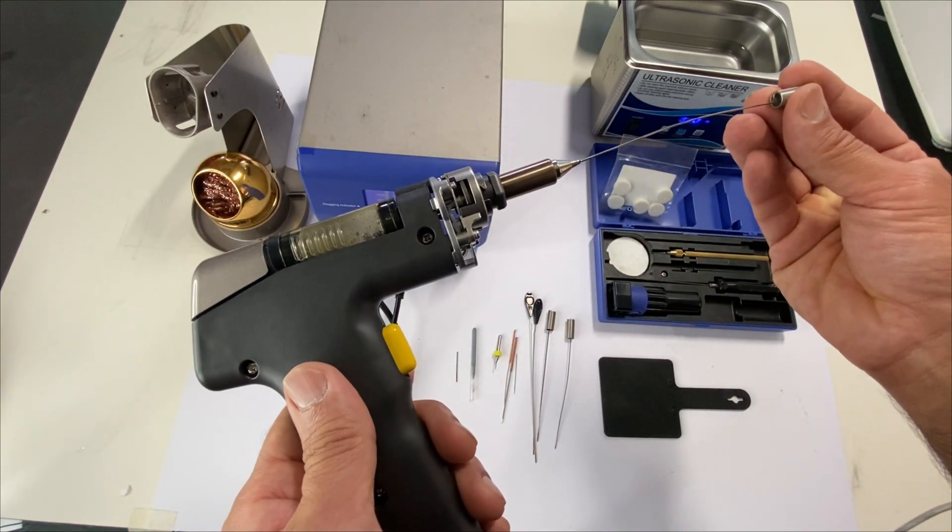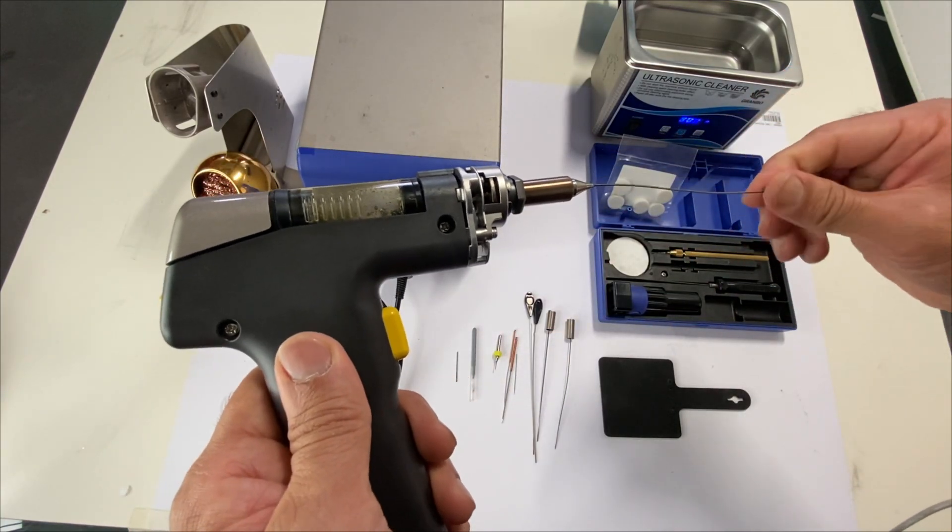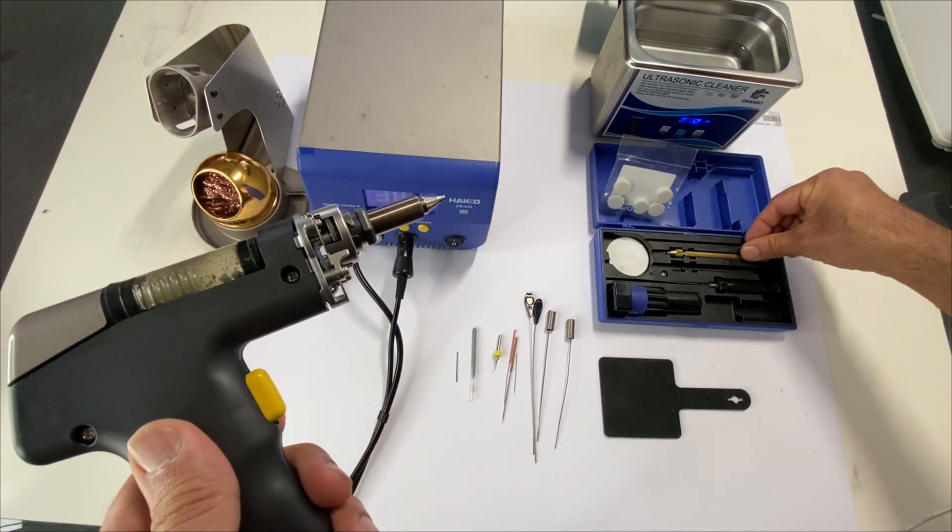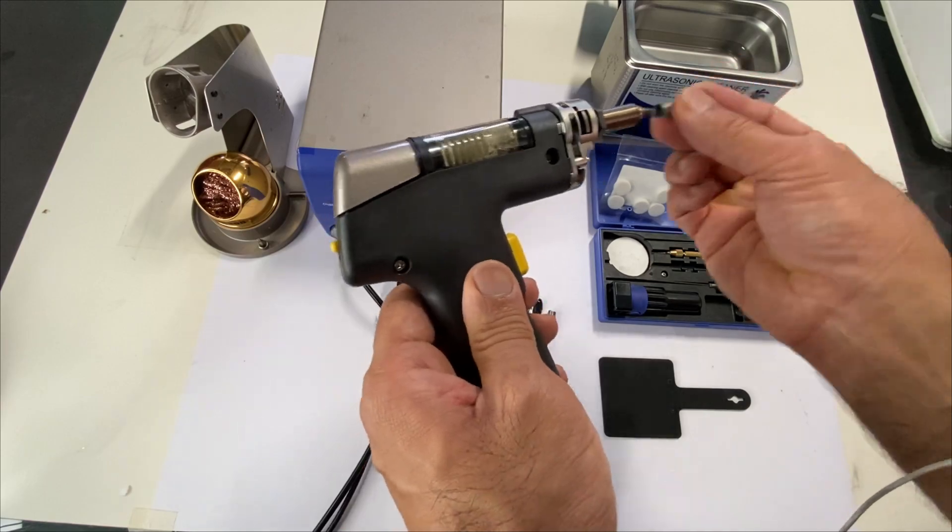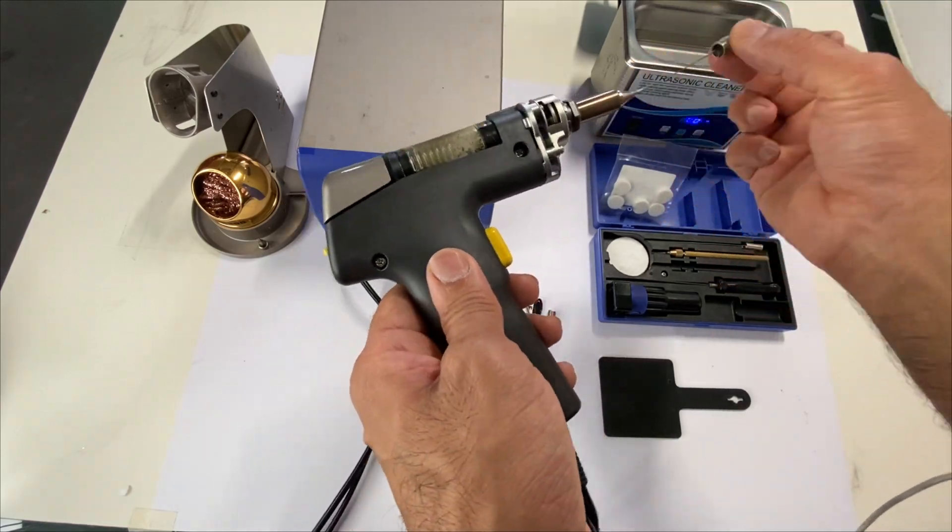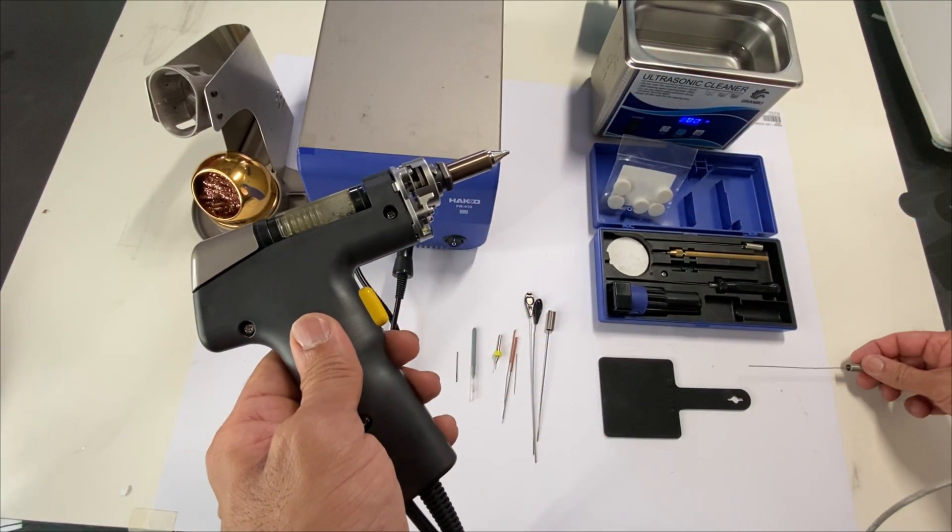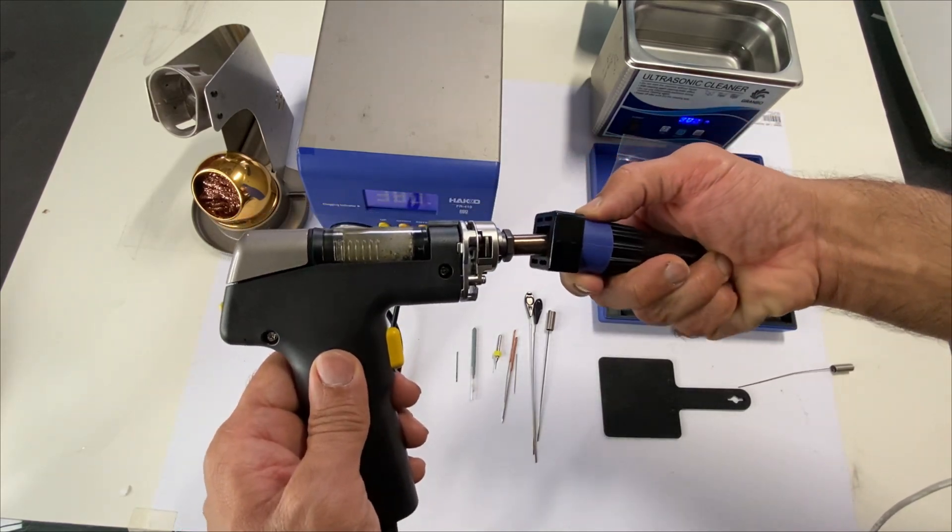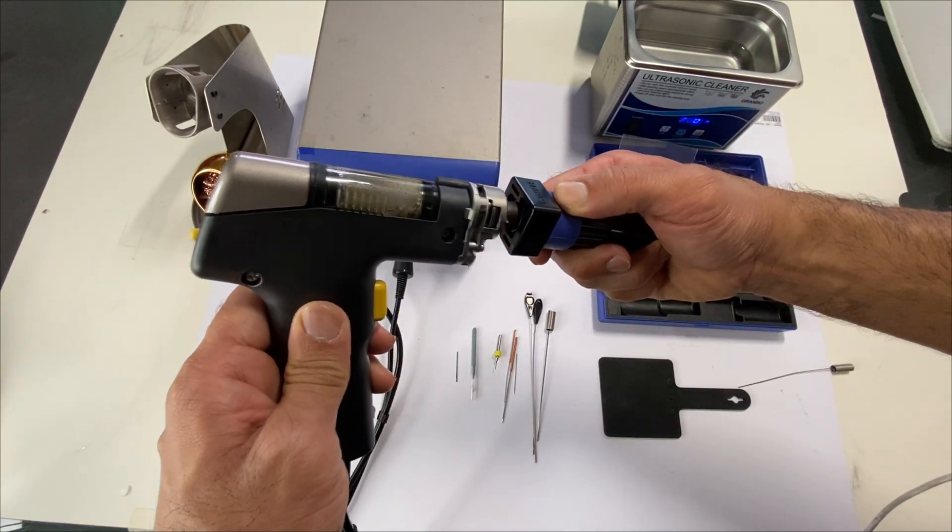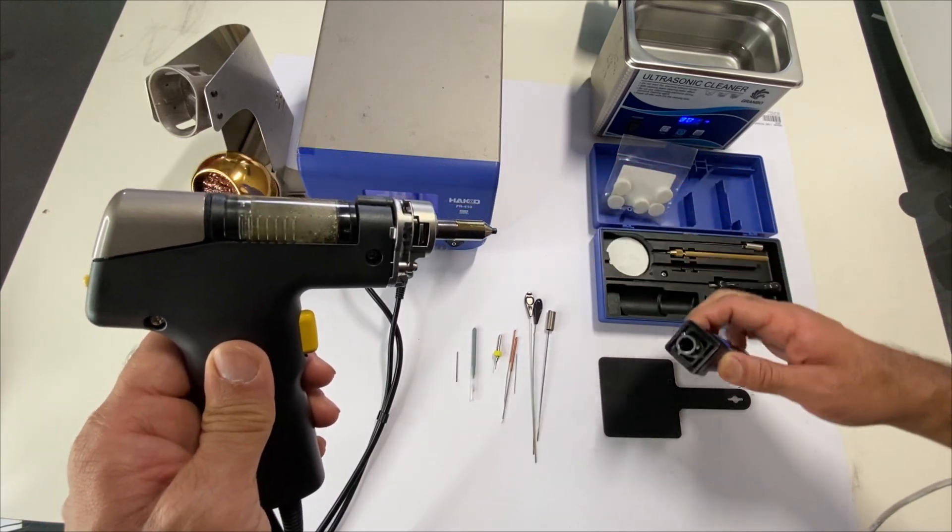Grab your long cleaning pin. That's really reasonable. Next, grab your nozzle wrench so we'll be opening it up. Twist it, and then we have the nozzle here.